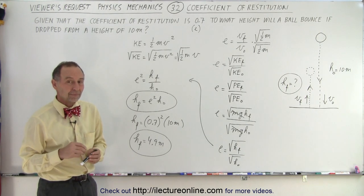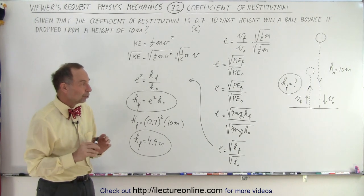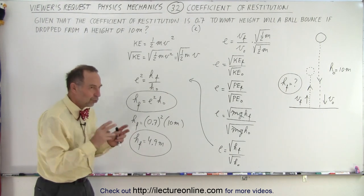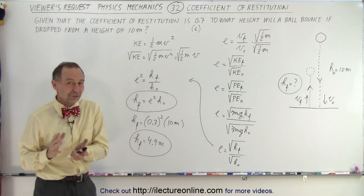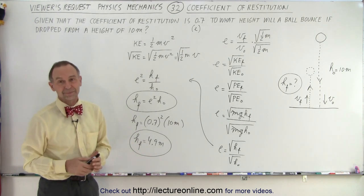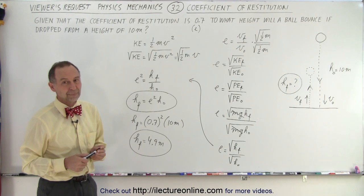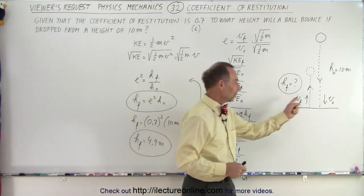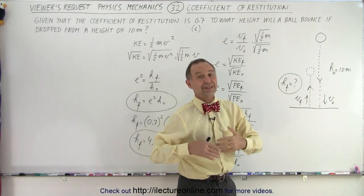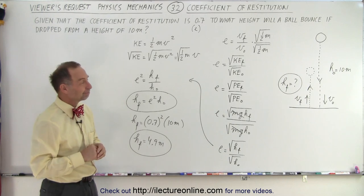Could you solve this problem with conservation of energy? No, you can't — you're not told how much energy is lost. The coefficient of restitution is precisely a way of describing how much energy is lost. If you were to use conservation of energy, you'd need to be told something else, like how much energy is lost. Also, the velocity coming down and the velocity going back up will not be the same. If they were the same, it would be a perfectly elastic collision and all energy is kept — and in that case, yes, you could use conservation of energy.